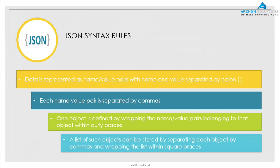Rule four: square brackets. When you are trying to pass a list of objects from one source to the other, one object is denoted by whatever is within curly braces. But if you have many such objects, you separate them with commas and wrap them in square brackets, making it a list of objects.